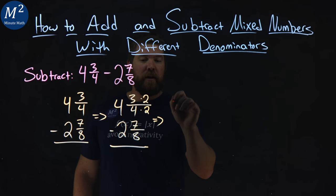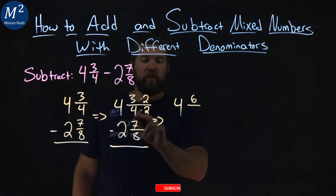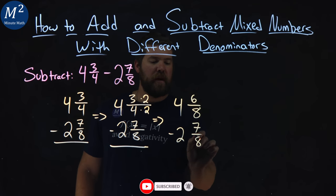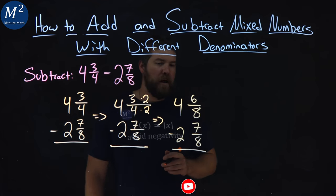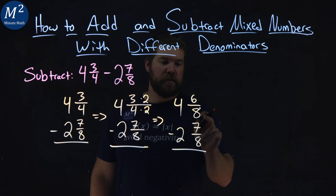So rewriting this out, we have 4 and 3 times 2 is 6 over 4 times 2 is 8, minus 2 and 7 eighths. Now, planning ahead here, I know if I'm subtracting the fraction portion of these mixed numbers...